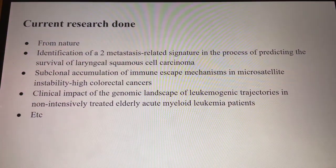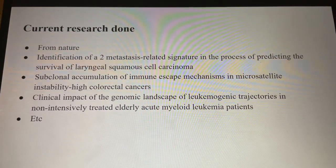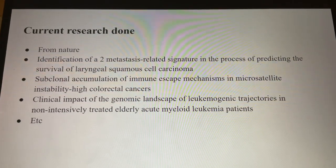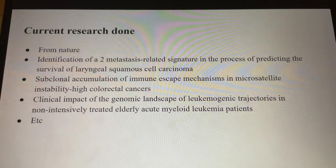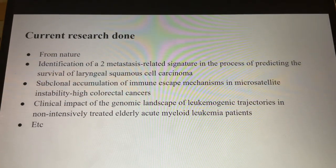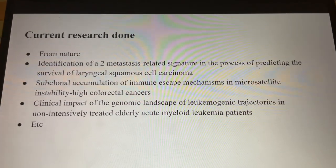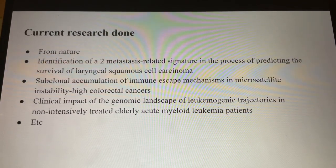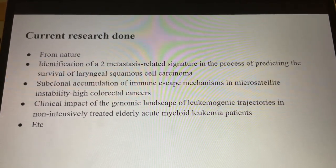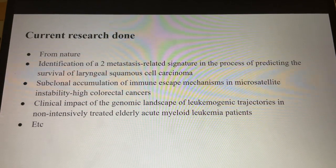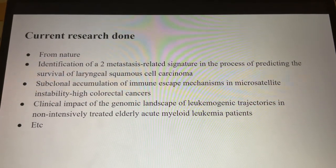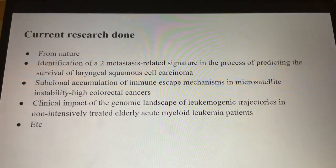Some of the current research that has been done so far: from Nature, the latest research and reviews on cancer genetics focus on topics such as the identification of two metastasis-related prognostic signatures in predicting the survival of laryngosquamous cell carcinoma, subclonal accumulation of immune escape mechanisms in microsatellite instability high colorectal cancers, the clinical impact of the genomic landscape and leukemogenic trajectories in non-intensively treated elderly acute myeloid leukemia patients, and more.